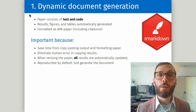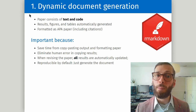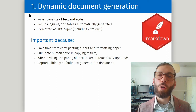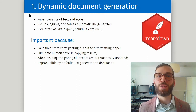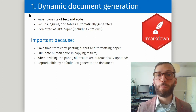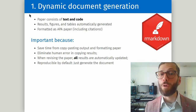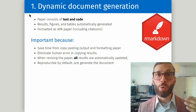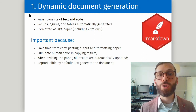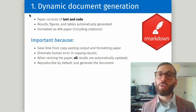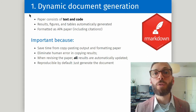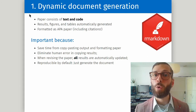Moreover, the manuscript can be automatically formatted as an APA style paper. This is important because it saves you a lot of time from copy-pasting output and formatting the paper, and it also eliminates mistakes in copying the results. I used to make mistakes all the time when I was still manually copy-pasting output, and that is one of the reasons I embraced this workflow. When you revise your paper — because of reviewer comments or co-author changes — all of the results are automatically updated. Moreover, a dynamic document is reproducible by default: just click the button to regenerate the document and you can see whether your analyses can be reproduced.